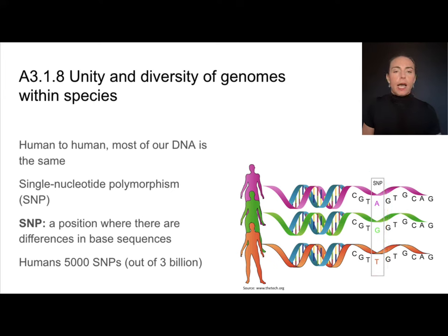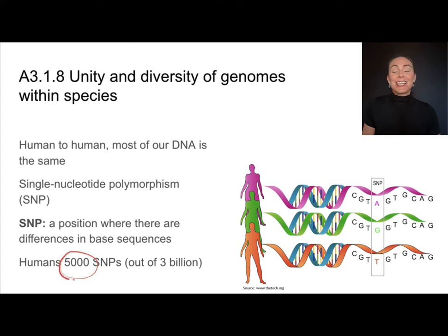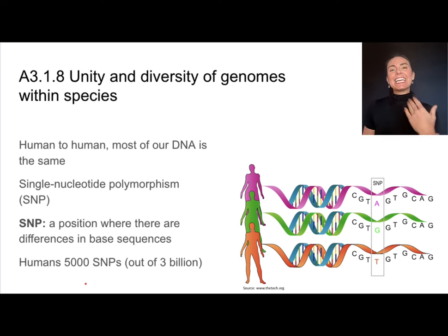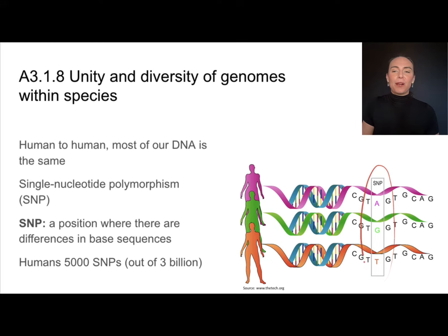In humans, out of about three billion base sequences that we have, we only have about 5,000 locations that show any variation. So this means for the vast majority of our DNA it's identical, and there's about 5,000 locations where there might be some differences.